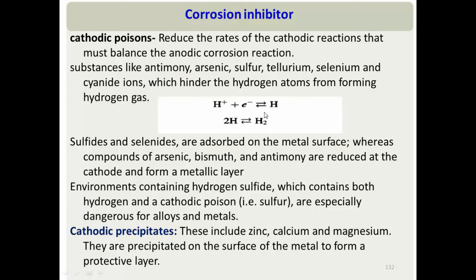When cathodic poisons hinder hydrogen gas formation, the cathodic reaction rate decreases, and consequently the anodic reaction and overall corrosion rate also decrease. However, a key problem is that by reducing hydrogen atom recombination into gas, these hydrogen atoms may instead diffuse into the metal, causing hydrogen blistering and hydrogen embrittlement — as previously discussed. This is why environments containing hydrogen sulfide, which acts as a cathodic poison, are so detrimental to metals.